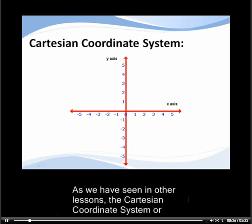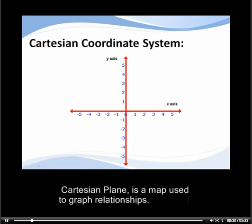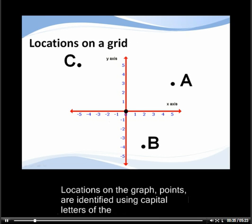As we have seen in other lessons, the Cartesian coordinate system, or Cartesian plane, is a map used to graph relationships. Locations on the graph, points, are identified using capital letters of the alphabet.